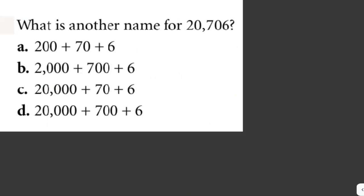What is another name for 20,706? So we can write 20,706 as 20,000 plus 700 plus 6. So the answer here is letter D.